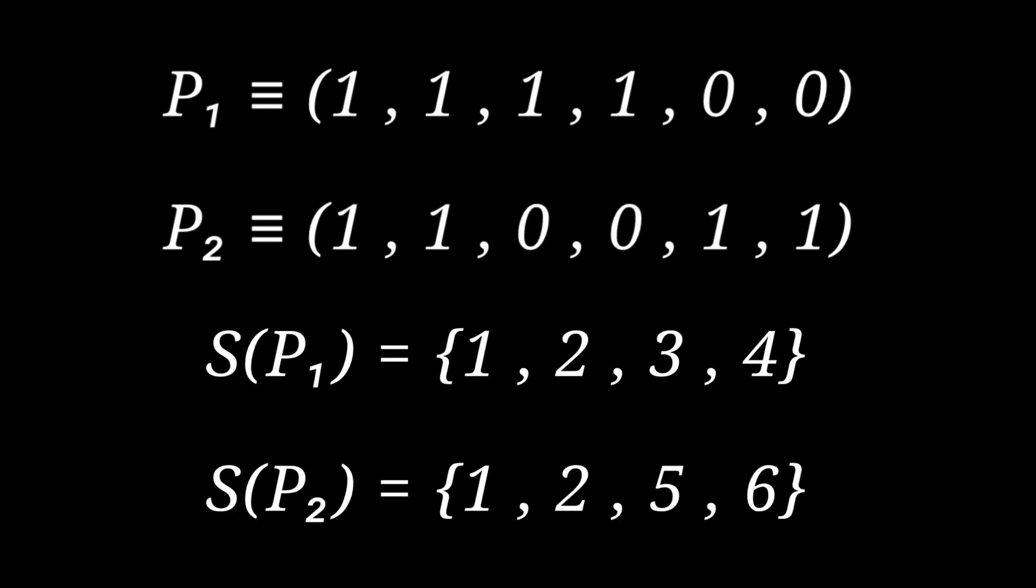One thing you may come up with at this point is using a set to denote a coordinate. So basically what we do is, every time we see a 1 in the coordinate, we put the position of that 1 into the set. Let's denote the set corresponding with p1 with S(p1) and the set corresponding with p2 as S(p2).